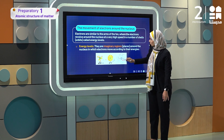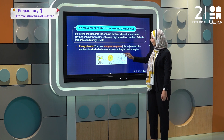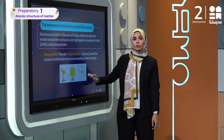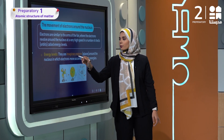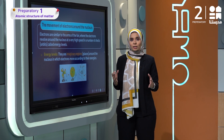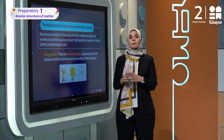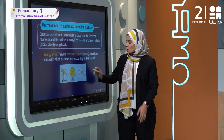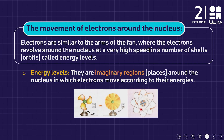Energy levels are imaginary regions or imaginary places. The word 'imaginary' means it's not real — just a way to imagine the place of the electron or the rotation of electrons around the nucleus. Energy levels are imaginary regions around the nucleus in which electrons move according to their energies.